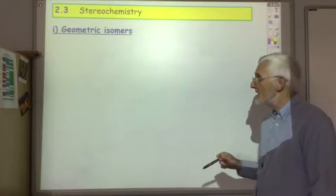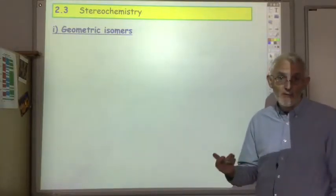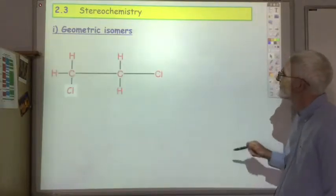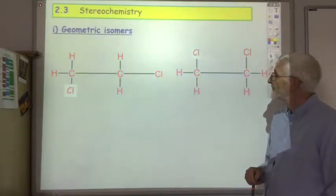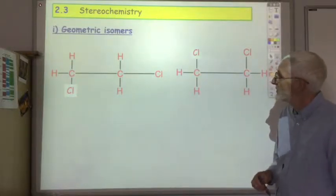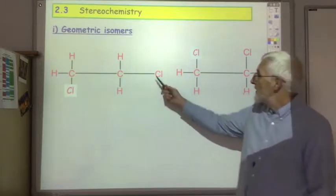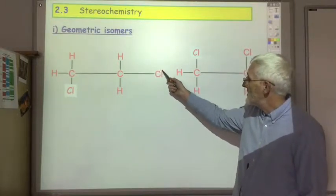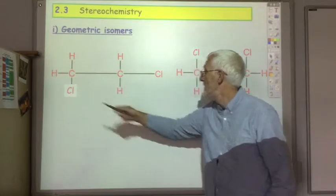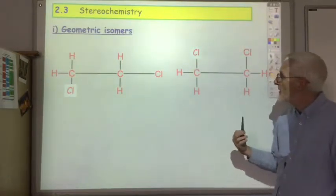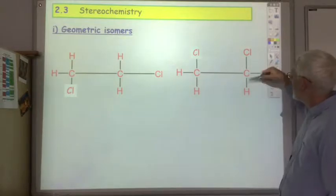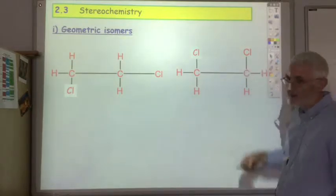So what do I mean by a geometric isomer? How does it differ from a normal isomer? If you consider these two compounds in which in both cases one of the hydrogens has been replaced by a chlorine, these aren't isomers because we get free rotation around the carbon-carbon single bond.